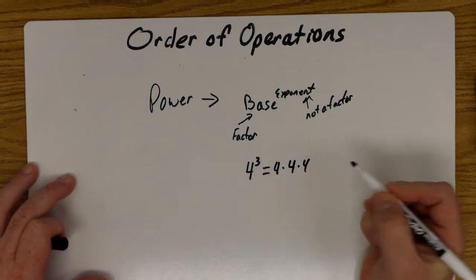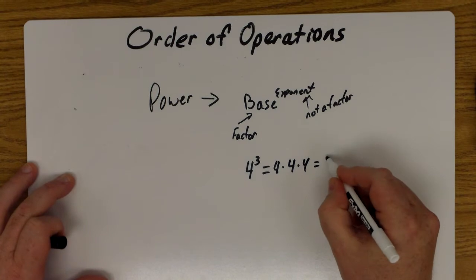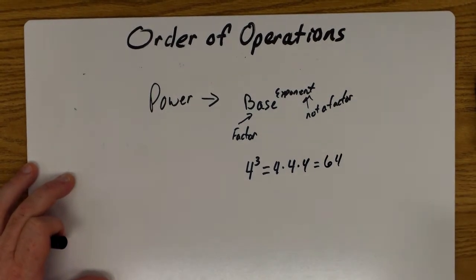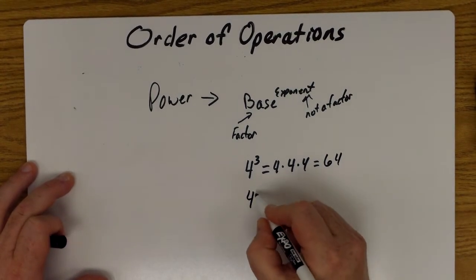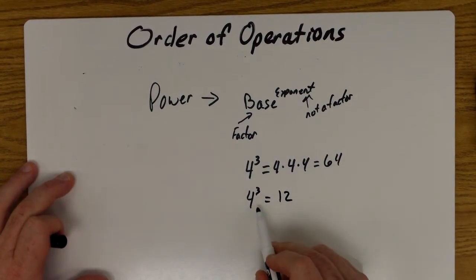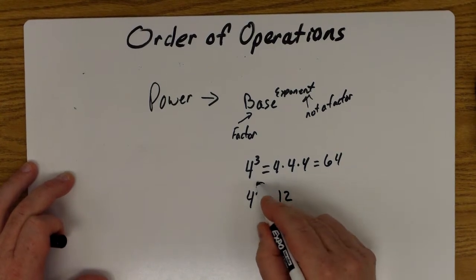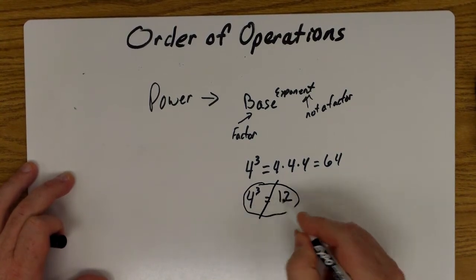and multiply it by itself three times, and that's going to give us 64. A lot of students will try to tell us that that is really 12. This is four times four times four, not four times three, so this is not correct.